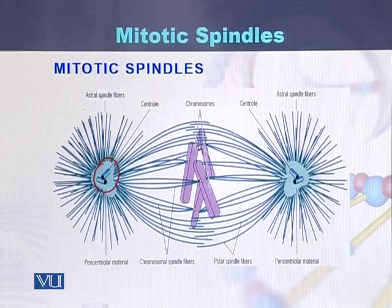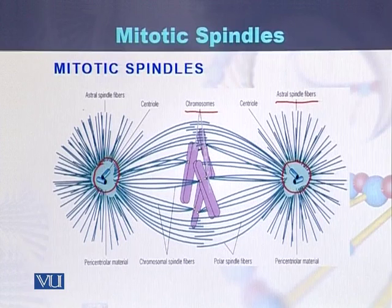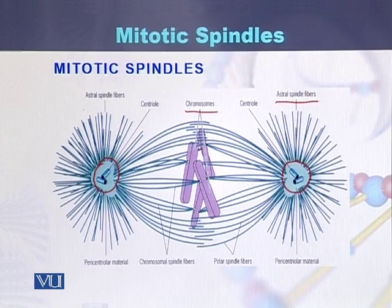In this diagram we can see that centrioles are present on both ends — one centriole on one pole of the cell and the second centriole on the other pole. Asters are the spindle fibers which emit from the centrioles. Chromosomes are present in the middle of the cell, and the spindle fibers that emit from the centrioles are attached at the centromere, where there is the kinetochore.